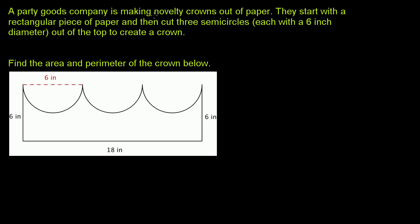A party goods company is making novelty crowns out of paper. They start with a rectangular piece of paper and then cut three semicircles, each with a 6-inch diameter, out of the top to create a crown. So they start with a rectangle and cut these semicircles out of the top of that rectangle. Find the area and perimeter of the crown.